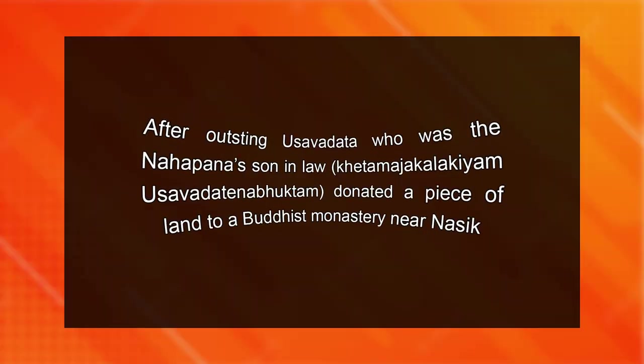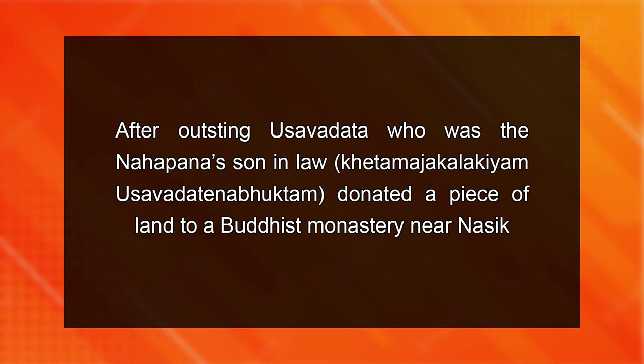Counter-struck coins of kings fully confirm that Satavahanas were victorious. In the 18th regnal year of Gautamiputra Satakarni, the third phase of Satavahana rule started. In this phase, after ousting Usavadata, who was Nahapana's son-in-law, it is recorded that Usavadata donated a piece of land to a Buddhist monastery near Nasik. This land was taken by Satakarni from Usavadata after defeating him.